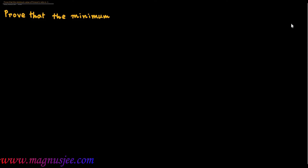Prove that the minimum value of Poisson's ratio is minus 1.